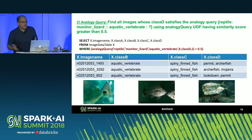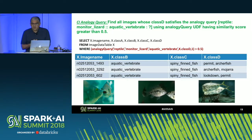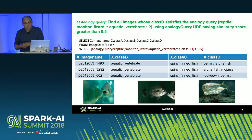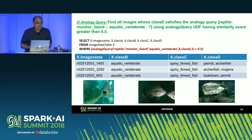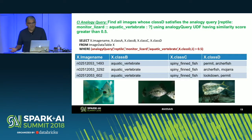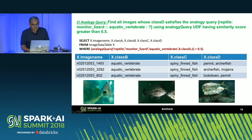Another example — very common in the NLP domain — is an analogy query. Here, the example is: from reptile to monitor lizard, what corresponds to aquatic vertebrate? The idea is that monitor lizard is an example of a reptile vertebrate; give me images that are types of aquatic vertebrate. The result is photos of fishes — specifically spiny-finned fish — and these are returned as the query result.